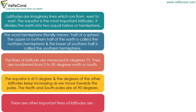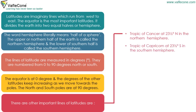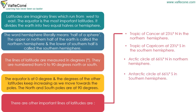There are other important lines of latitude: the Tropic of Cancer at 23 and a half degrees north in the northern hemisphere, the Tropic of Capricorn at 23 and a half degrees south in the southern hemisphere, the Arctic Circle at 66 and a half degrees north in the northern hemisphere, and the Antarctic Circle at 66 and a half degrees south in the southern hemisphere.